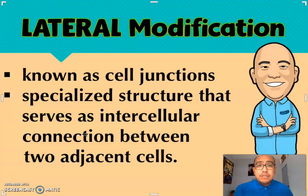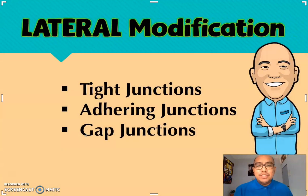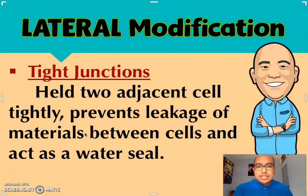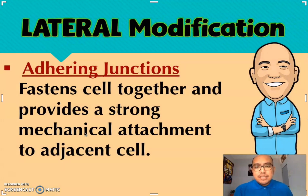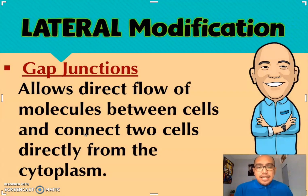The last type of modification is the lateral modification, also known as cell junctions — specialized structures that serve as intercellular connections between two adjacent cells. There are three types of lateral modification. Tight junctions hold two adjacent cells tightly and prevent leakage of materials between cells, acting as a water seal. Adhering junctions fasten cells together and provide a strong mechanical attachment to the adjacent cell. Gap junctions allow the direct flow of molecules between cells and connect two cells directly from the cytoplasm.